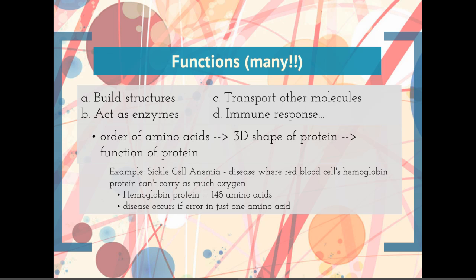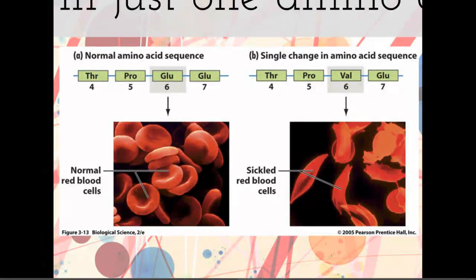There's a disease called sickle cell anemia, where red blood cells have hemoglobin proteins that can't carry as much oxygen as they're supposed to. The hemoglobin protein has about 148 amino acids. If there's an error in just one of those amino acids, it changes the shape of the protein enough that it can't carry as much oxygen, and it actually affects the shape of the blood cell itself.